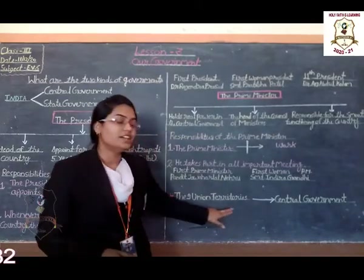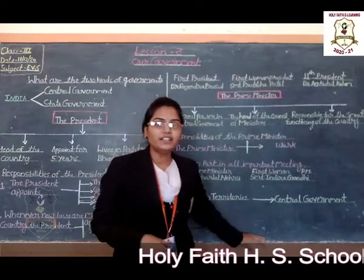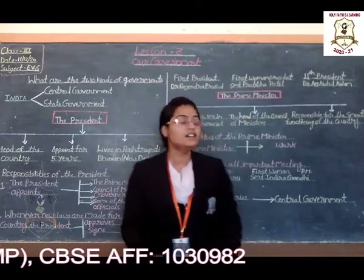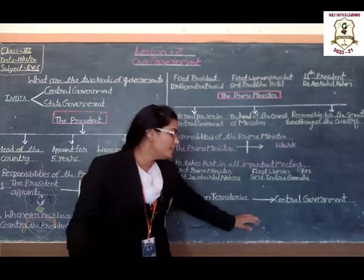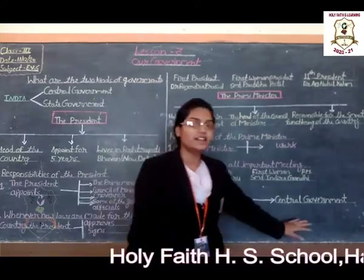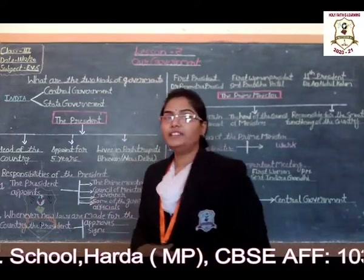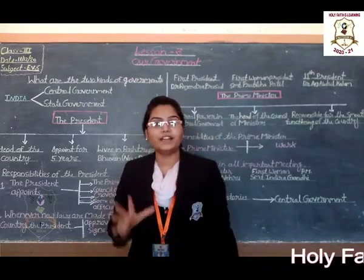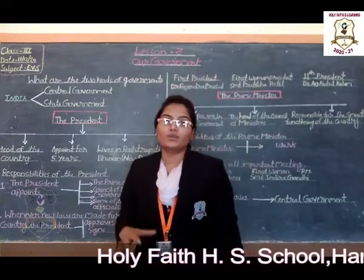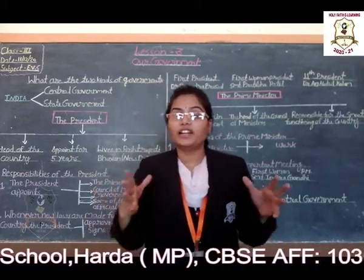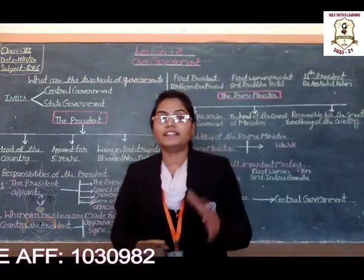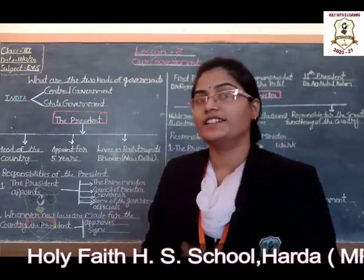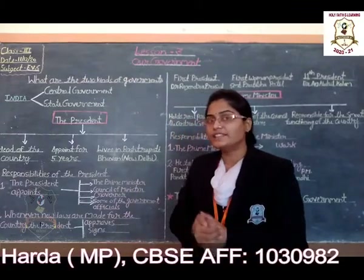How many union territories do we have? We have 9 union territories, and these union territories are taken care of by the central government. Both central government and state government are very important to us, so we must select the best people to run our country.